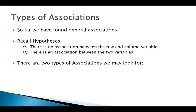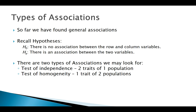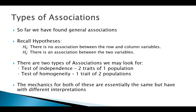there are actually two types of associations we may be interested in. One would be testing for independence — that's where I have individuals from a single population and I'm comparing two characteristics or two variables of a single individual. The other would be testing for homogeneity — that's where I have a single variable or single trait that I'm interested in from two different populations.